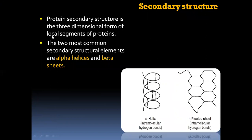Secondary structure is the three-dimensional form of local segments of proteins. While the primary structure is a single-dimensional linear arrangement held by peptide bonds, the secondary structure is three-dimensional. Under secondary structure we have alpha helices and beta pleated sheets. In the diagram, the alpha helix resembles a telephone cord, while the beta pleated sheets show polypeptide chains coiled and held by intramolecular hydrogen bonds.